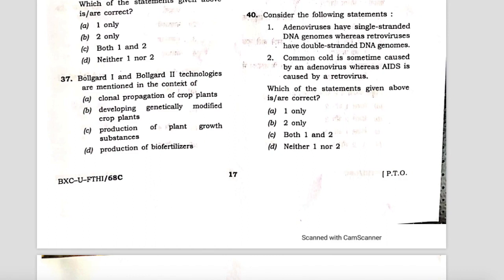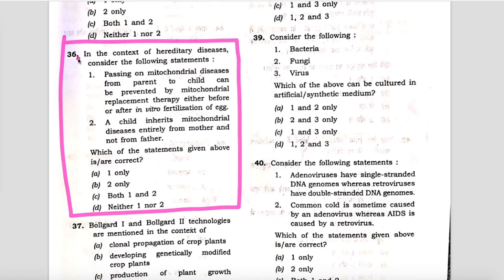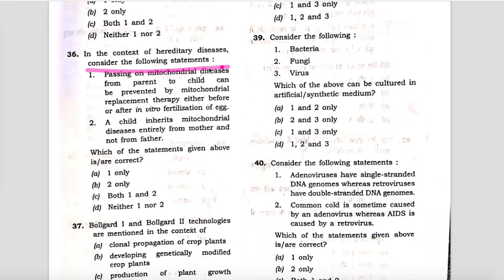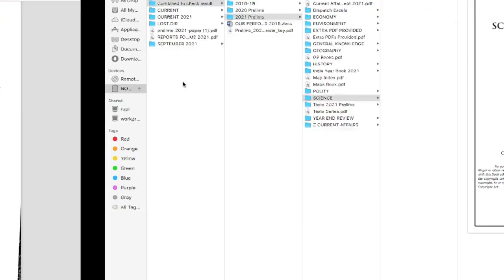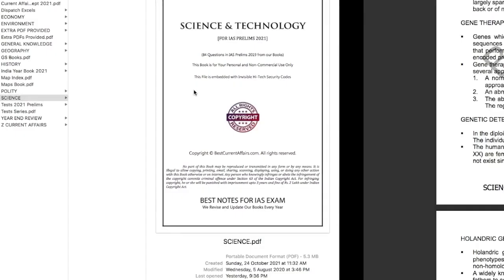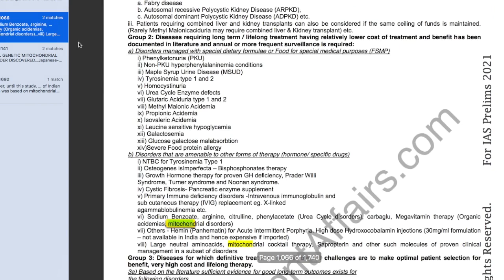The next question: in the context of hereditary diseases, consider the following statements. The first statement is that passing on mitochondrial diseases from parent to child can be prevented by mitochondrial replacement therapy, either before or after in vitro fertilization of the egg. Statement one is correct. Now see the current affairs book — April 2021 current affairs book, page number 10.